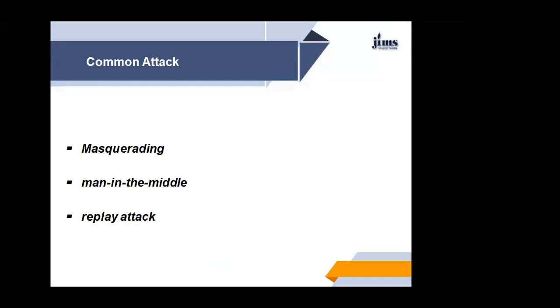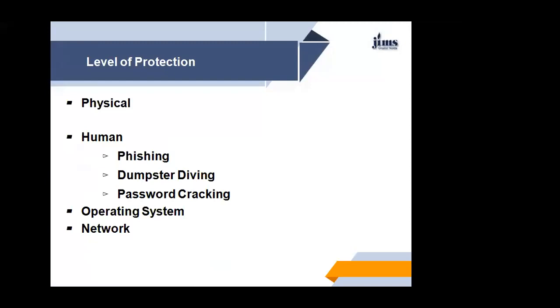In the level of protection, there are different levels: physical level of protection, human protection—which includes phishing, dumpster diving, and password cracking—operating system level protection, and network protection.